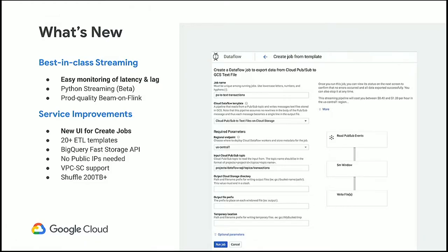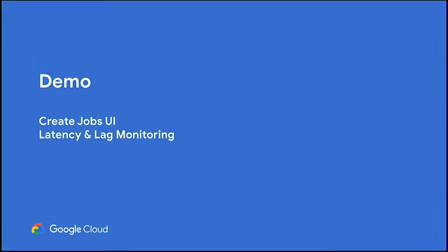Our batch customers like the fact that they can join and group hundreds of terabytes of data using the Dataflow Shuffle. Let me show you a quick demo of how easy it is to create a new streaming job that dumps all the data from a PubSub topic into GCS storage, effectively creating backups of streams, and then creating alerting for these streaming pipelines based on predefined conditions.